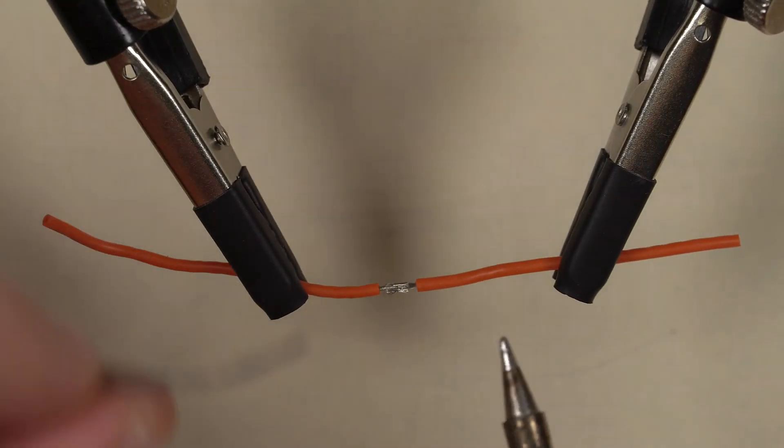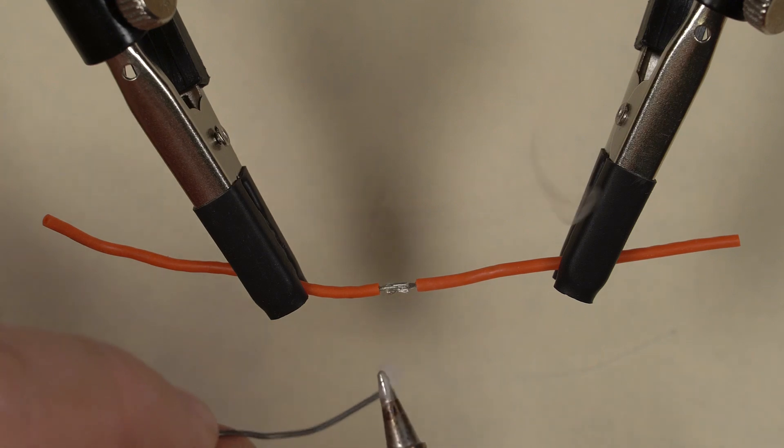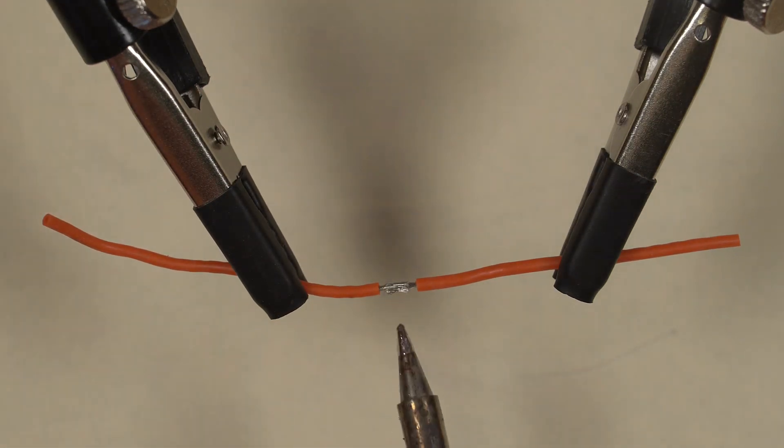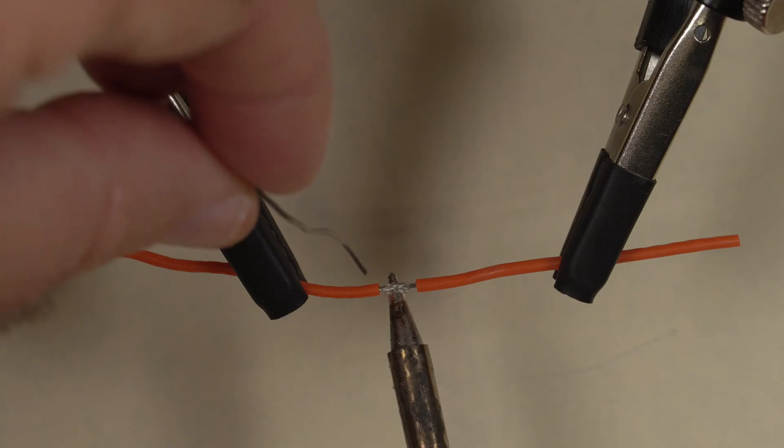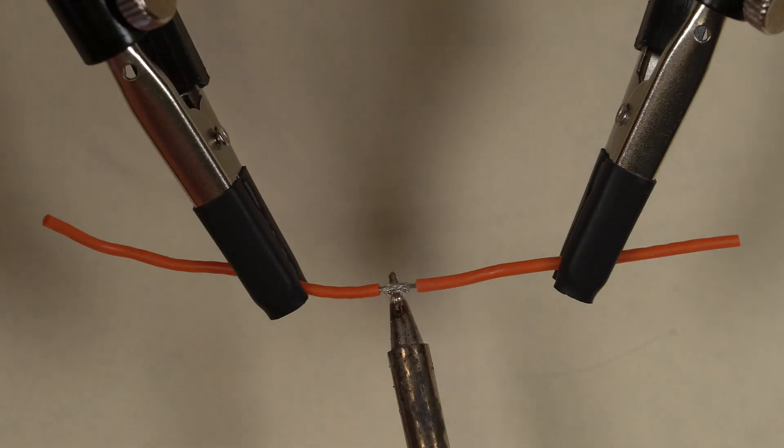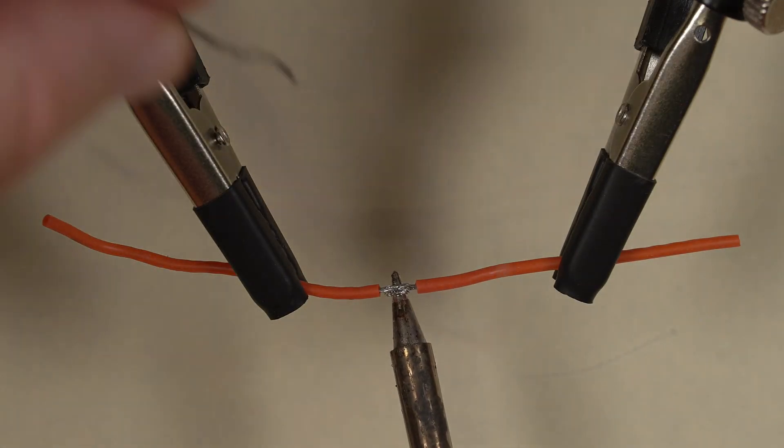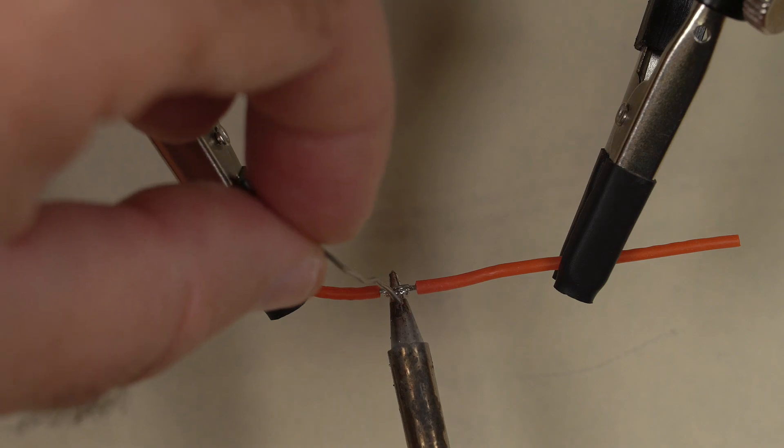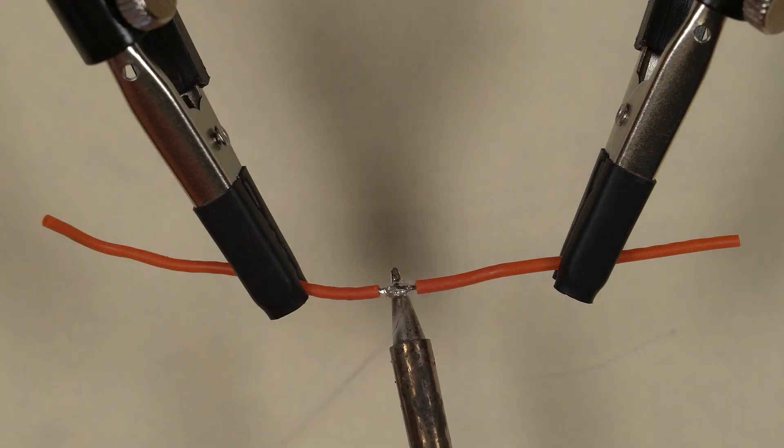I'll put a little bit of solder on the edge of the soldering iron, on the tip of the soldering iron. Then I'll place the soldering iron underneath. Do a little bit more and wait. And then I will put the solder on the top of the connection.